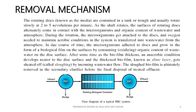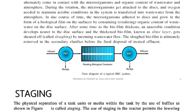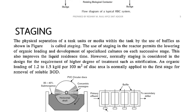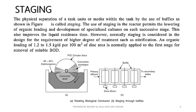Microorganisms attach to the disc surface and form a coating — a biofilm. When exposed to air, aerobic conditions allow oxygen to be absorbed. As the biofilm grows thicker, anaerobic conditions develop in the inner layers. After the biofilm becomes too thick, sloughing occurs — bacteria are removed from the film along with degraded solids and organic material.